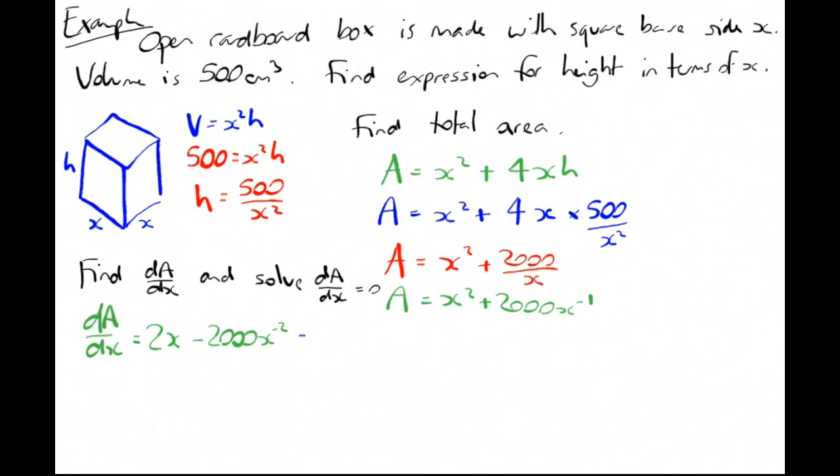dA/dx = 2x - 2000x⁻². Bring the power down to the front, not 1 over the power. Solve that equals to 0.